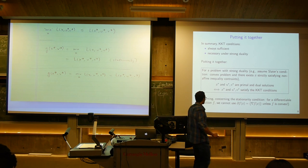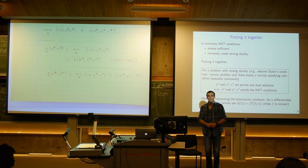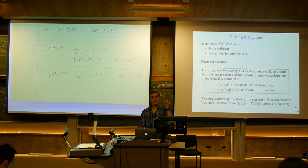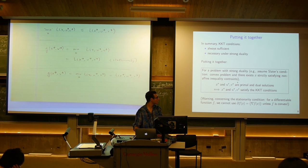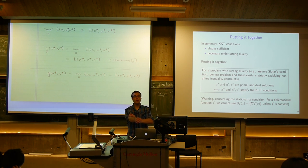Warning about the stationarity condition: for a differentiable function, we cannot assert that its subdifferential is just the set containing its gradient unless we know the function is convex. So for a smooth non-convex problem, stationarity could still be very hard to work with. That's what makes the KKT conditions most useful for convex problems. Boyd and Vandenberghe present things in terms of gradients only, with no appearances of subgradients.